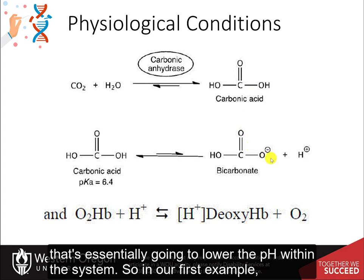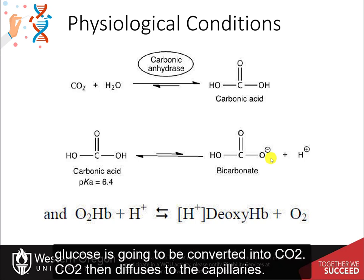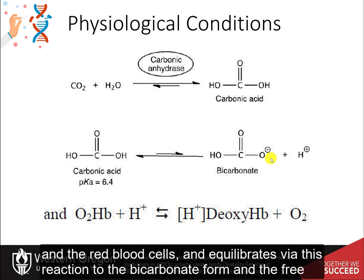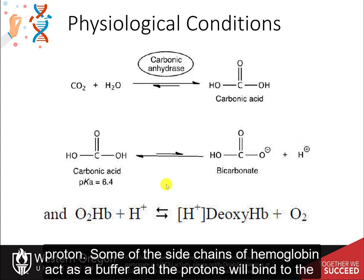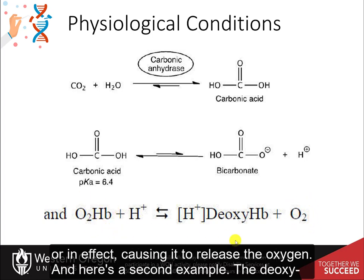In a muscle during exercise, glucose is converted into carbon dioxide. The carbon dioxide diffuses to the capillaries and red blood cells, equilibrating via this reaction to the bicarbonate form and a free proton. Some side chains of hemoglobin act as a buffer, and protons bind to the deoxy form of hemoglobin, preventing it from binding oxygen — or in effect, causing it to release oxygen.